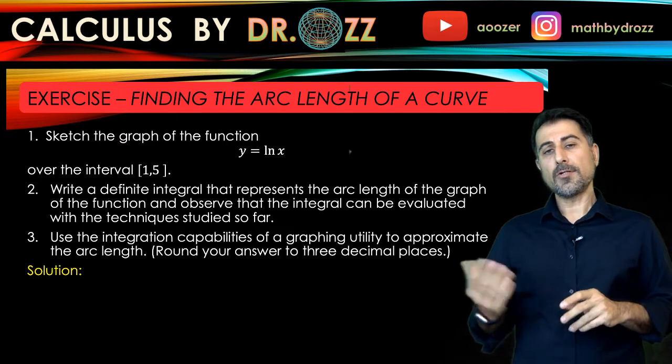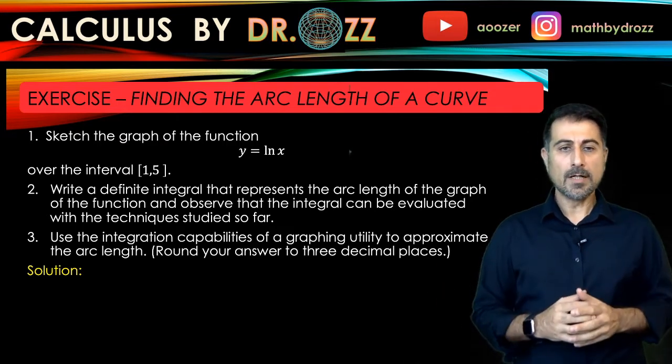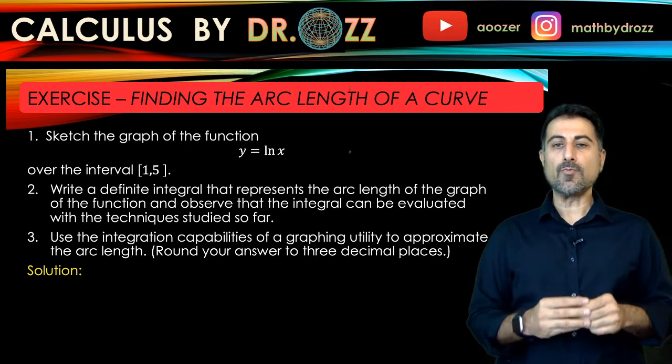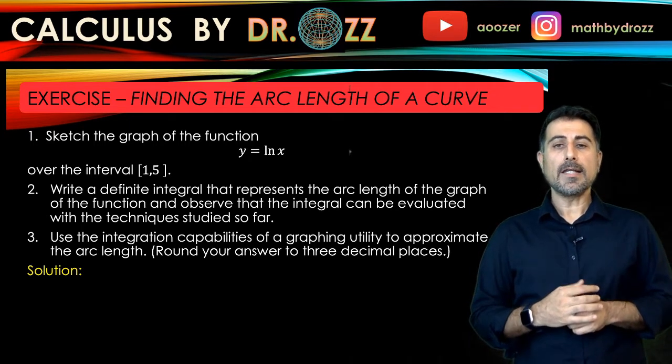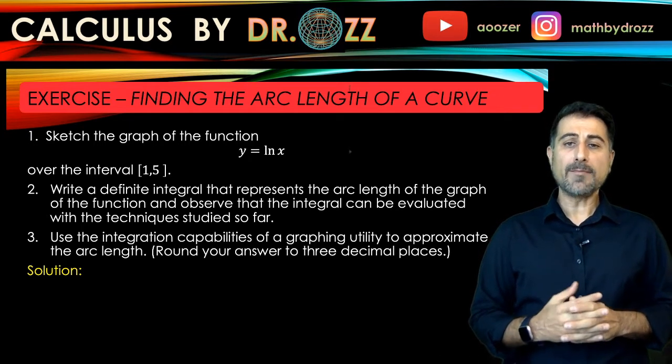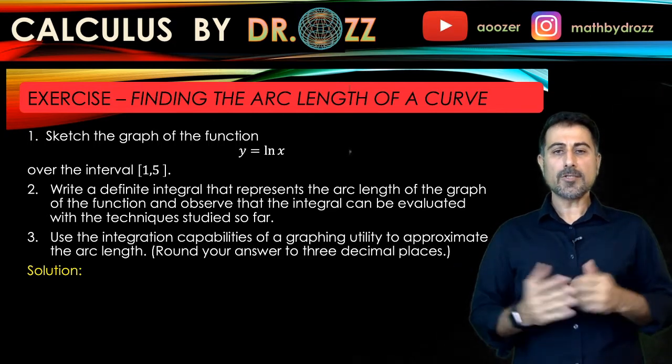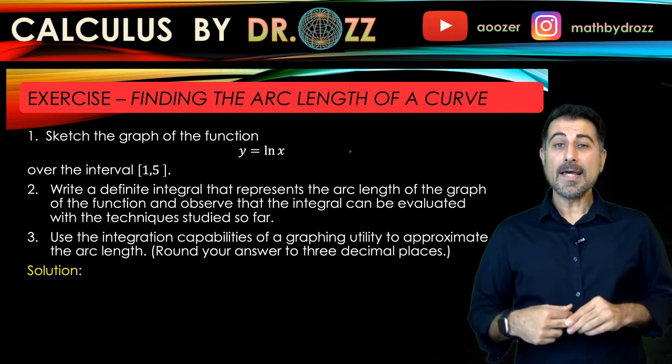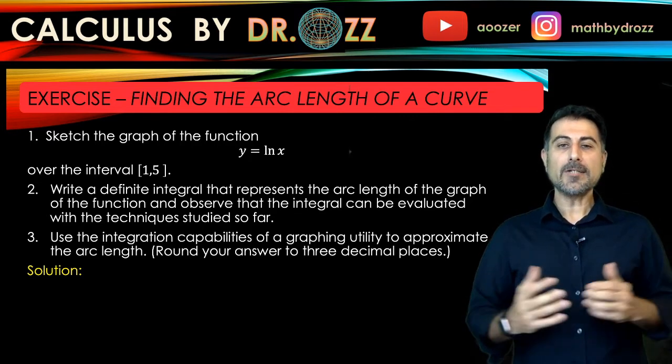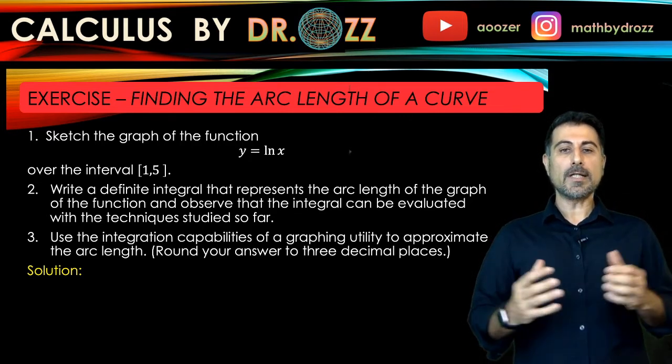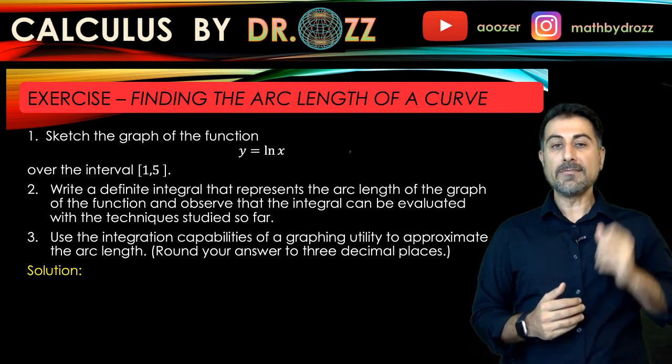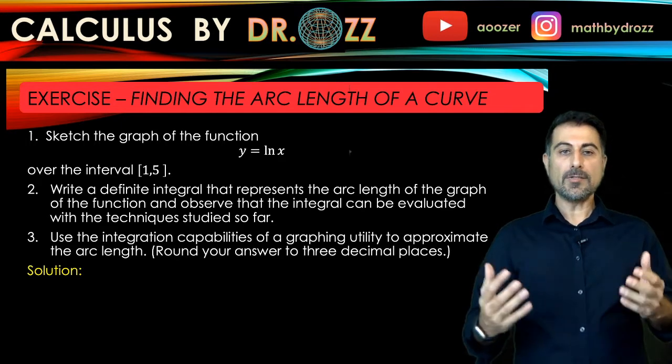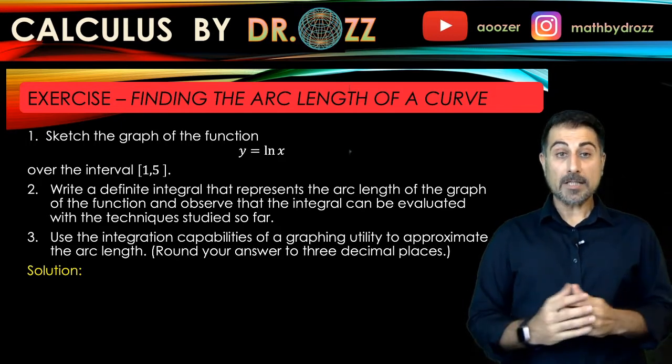So the curve provided to us is y equals ln x. This is one of the basic functions that we dealt with in Calc 1 over and over. And we're considering the interval 1 and 5. First, we're going to sketch the graph. So for that reason, have your graphing calculator ready. And next, we're going to write down the integral corresponding to the arc length of the graph on the given interval. And eventually, we're going to try to approximate that area by using our calculator.